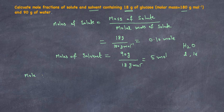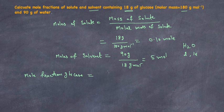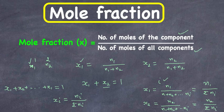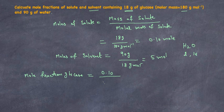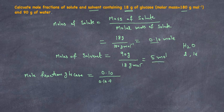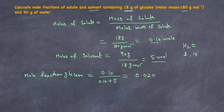Let's calculate the mole fraction of the solute first, which is glucose. The mole fraction of glucose equals the number of moles of glucose, 0.10, divided by the total number of moles of all components — so moles of glucose plus moles of water: 0.10 plus 5, giving 5.10 total moles. Solving this gives a mole fraction of glucose of approximately 0.020. Since numerator and denominator are both in moles, the result is unitless — that's why mole fraction has no units.